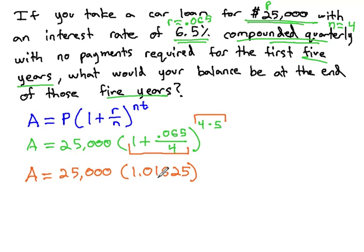As for rounding, sometimes the rounding gets really weird inside this parenthesis. I would say use every digit your calculator gives you to be as accurate as possible. If you round too much, you can end up being off quite significantly. So put all the digits your calculator gives you. In the exponent, 4 times 5 is 20.